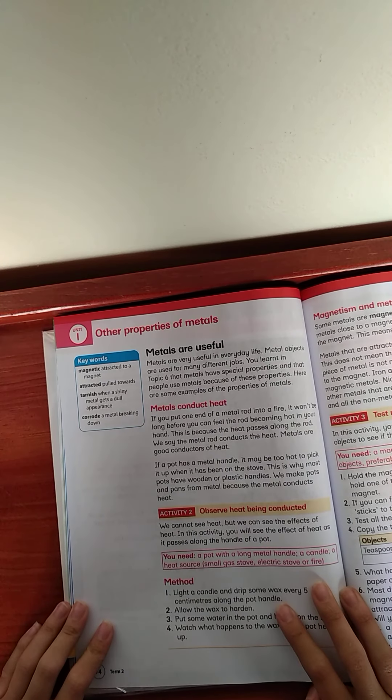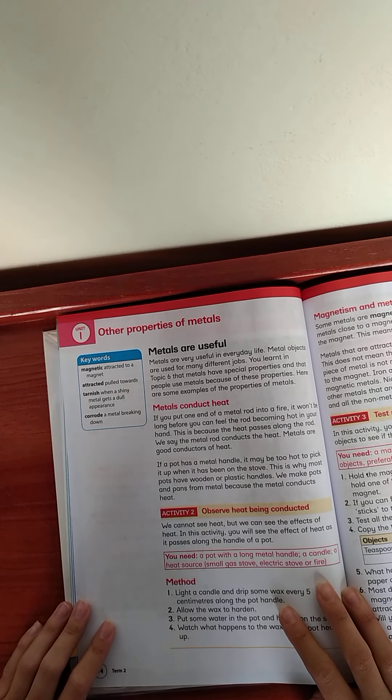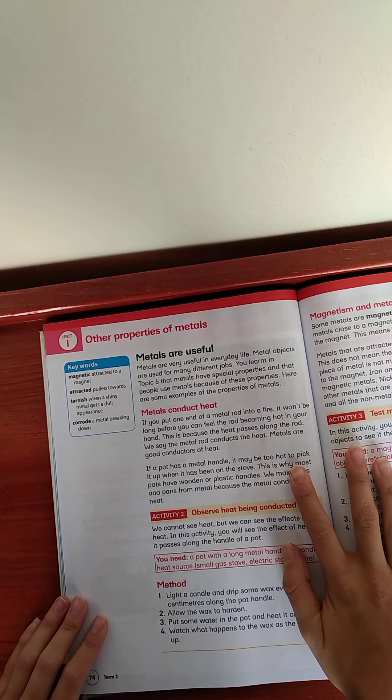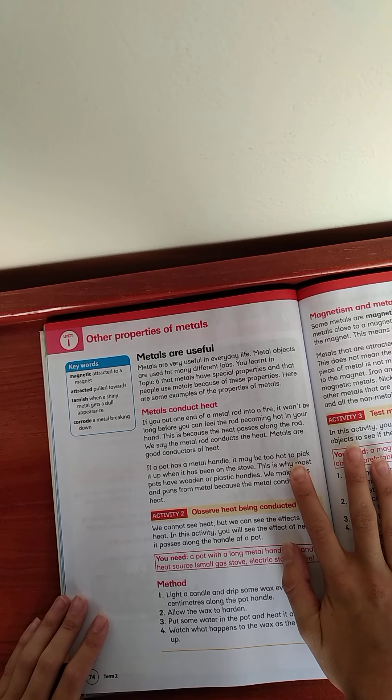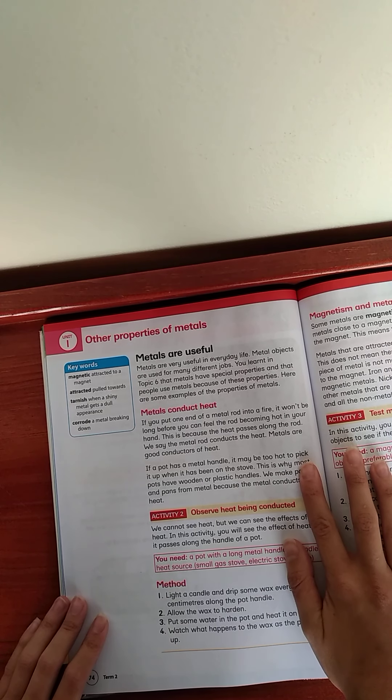Metals are useful. Metals are very useful in everyday life. Metal objects are used for many different jobs. You learned in topic six that metals have special properties and that people use metals because of these properties. Here are some examples of properties of metals. Metals conduct heat.